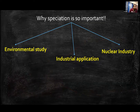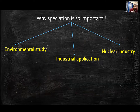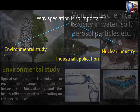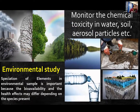Why is speciation so important? It has lots of applications in environmental science, as well as huge industrial and nuclear applications. In environmental studies, to monitor chemical toxicity in different types of environmental samples like water, soil, or aerosol particles, speciation is of utmost importance.